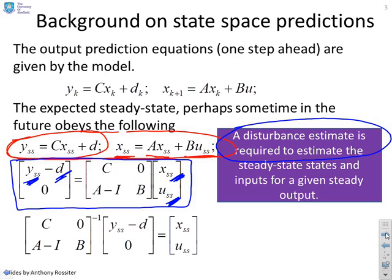Now having got these consistency equations, you can basically invert the matrix and you find that the steady-state state and input depend upon the steady-state output and disturbance. And you've got a very clean relationship there.